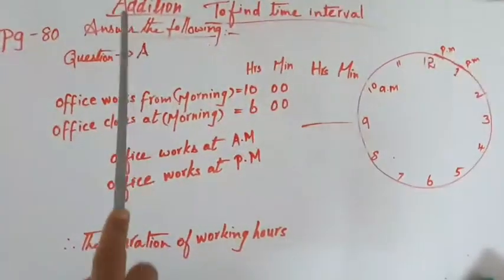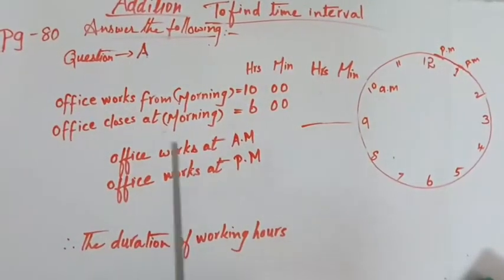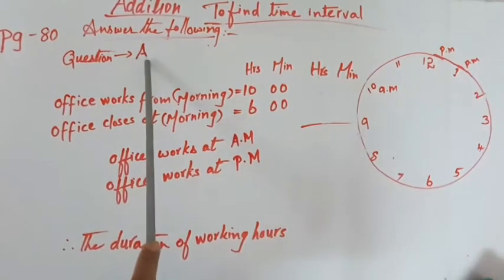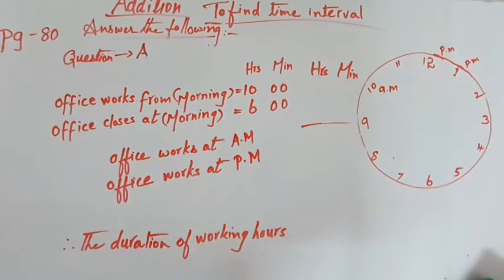Look at this sum children. This is our addition sum of your textbook question number A. An office works from 10 a.m. to 6 a.m. What is the duration of working hours? So we have to write in this way: office works from morning 10 a.m., office closes at morning only 6 a.m.